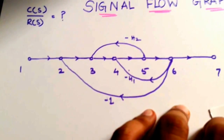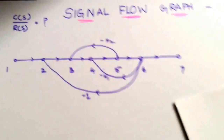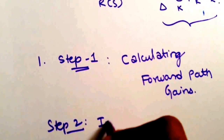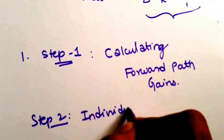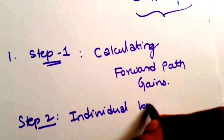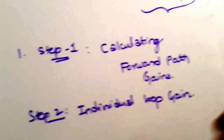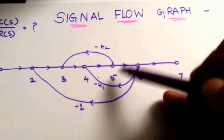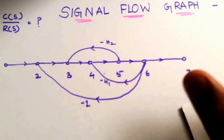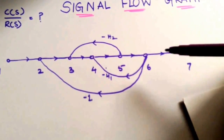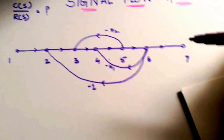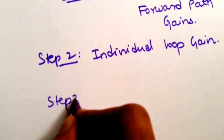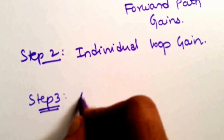Step two is individual loop gain. As you can already guess, individual loop gain is the number of loops present and the gain of each loop separately. In our question we have three individual loops. Step three is the gain products of two non-touching loops.